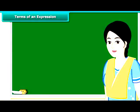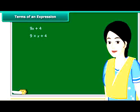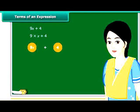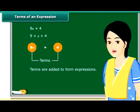Now we will discuss what terms of an expression and their factors are. Consider the expression 9x plus 4. In forming this expression, we first formed 9x separately as a product of 9 and x, and then added 4 to it. These expressions have parts which are formed separately and then added — we call these parts as terms. That means terms are added to form expressions.